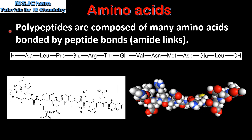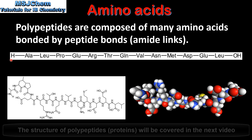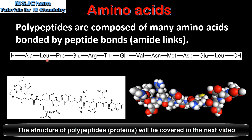And finally we look at polypeptides. Polypeptides are composed of many amino acids bonded by peptide bonds or amide links. Here we can see the primary structure of a polypeptide, which shows the sequence of the amino acids. Each amino acid bonds in a condensation reaction, producing a molecule of water and forming a peptide bond. At the bottom we can see the structural formula of the polypeptide, and on the right we have the space-filling model.